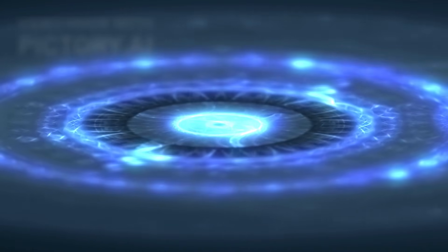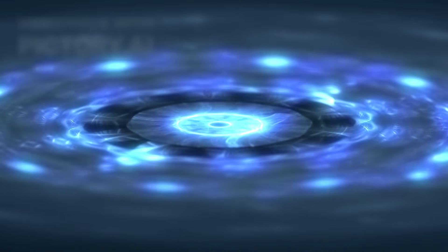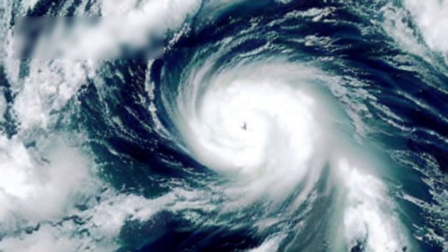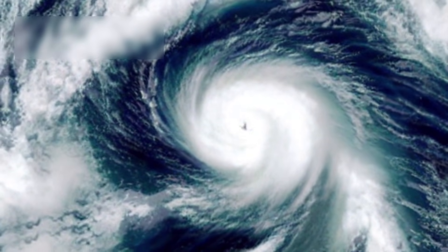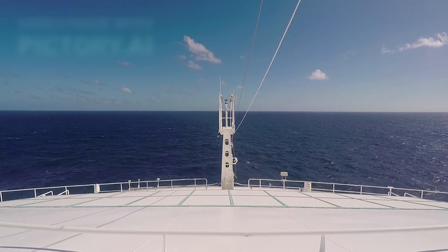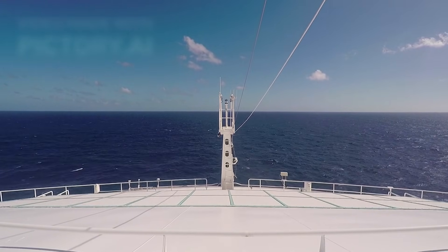Interstellar space, it turns out, is not an empty corridor between stars. It is a vast, turbulent ocean of invisible currents, echoes, and storms. And Voyager is our tiny sailboat navigating weather humanity never knew existed.